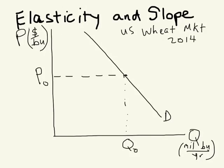If we have two graphs written in the same graphical space so the scale can be held constant, then we can say something about the relationship between the slope of a demand curve and the price elasticity of demand. And specifically, we can do this when we've got two demand curves that pass through the same point. I've drawn a demand curve — I've chosen the U.S. wheat market. By the law of demand, this demand curve is downward sloping.